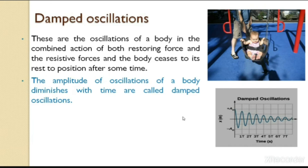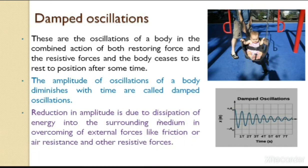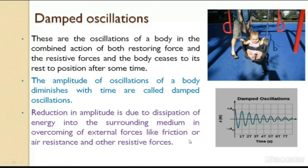The amplitude diminishes in every cycle because energy is dissipated into the damping medium. As the bob makes its to-and-fro motion, in every cycle a small amount of energy is given to the surrounding medium due to friction. This energy is slowly and completely transferred to the resistive medium, so the particle loses energy gradually and finally settles at the rest position.